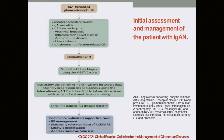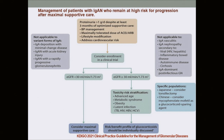Looking at the KDIGO 2021 guideline: when you first get a patient with IgA-dominant glomerulonephritis, the first step is to exclude secondary causes such as IgA vasculitis, IgA-dominant infection-related GN, or secondary viral and inflammatory causes. After that, classify the patient using MEST-C Oxford classification. For all patients, the primary management choice is optimum supportive treatment for at least 3 months — with a blood pressure target of 120/70, maximum tolerable dose of ACE inhibitor or ARB, and lifestyle modifications such as weight reduction and smoking cessation.